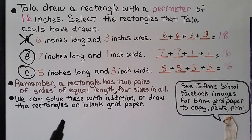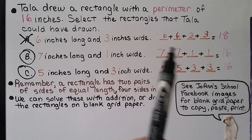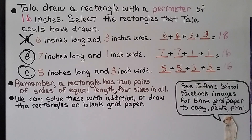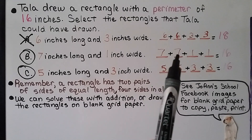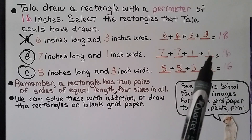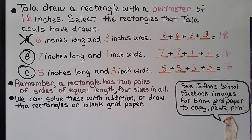We can solve these with addition like we did, or we could draw rectangles on blank grid paper. We just have to draw one with the correct side lengths and check the perimeter. If you don't have blank grid paper, you can find it on the internet, or you can go to my Joann School Facebook Images section where you'll find blank grid paper you can copy, paste, and print.